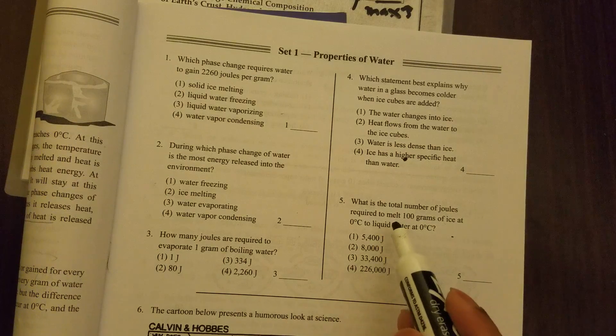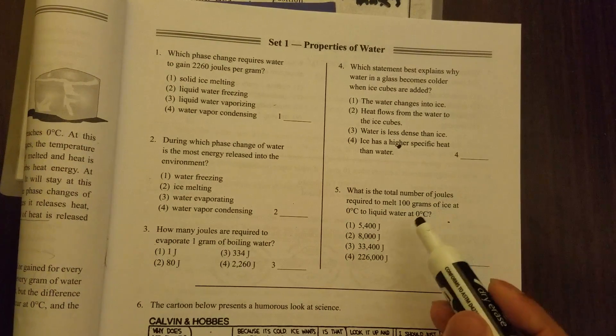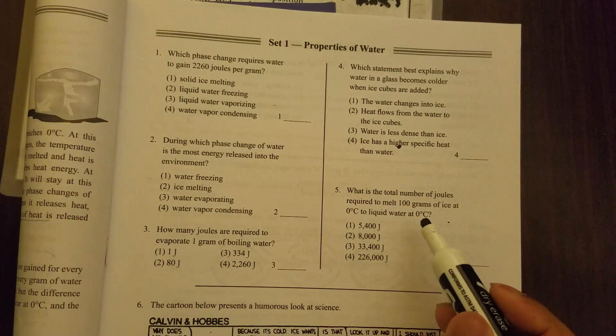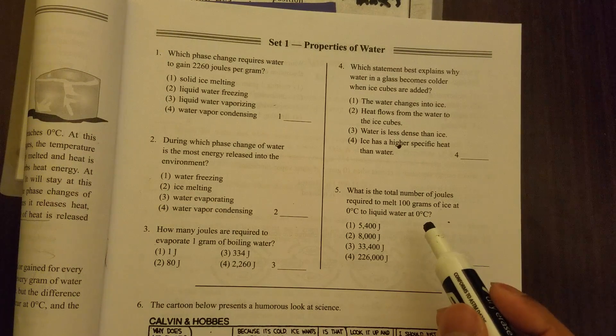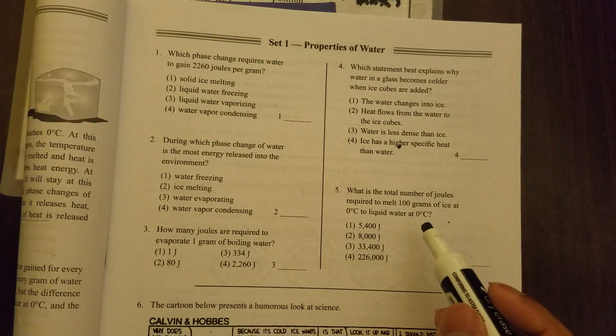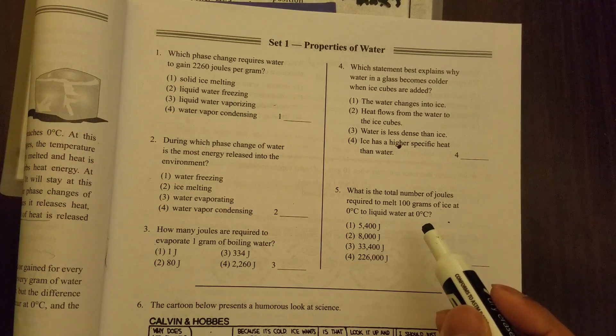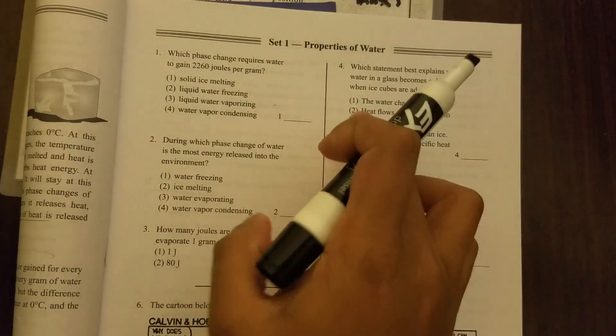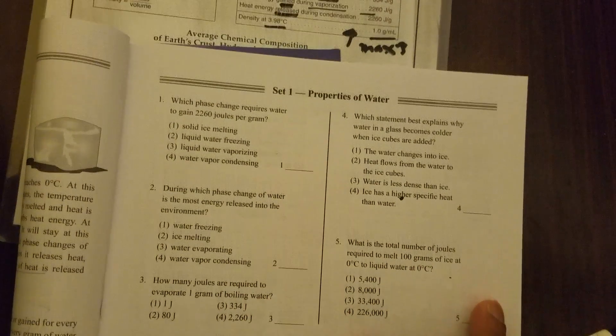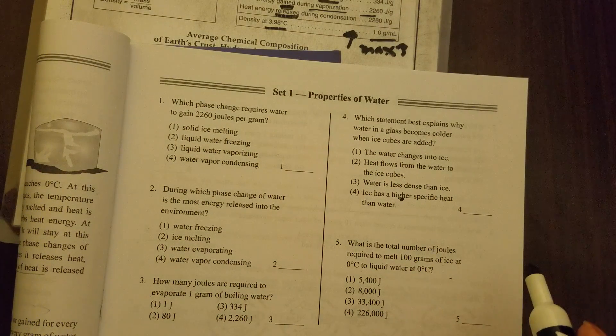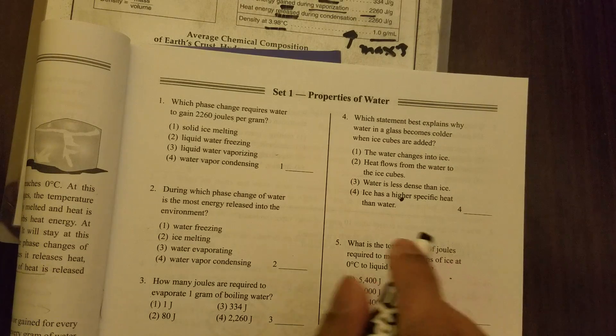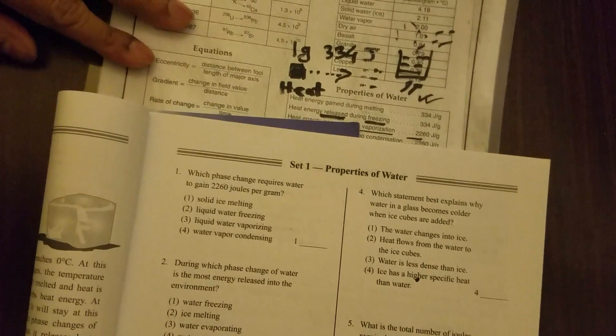Now let's look at question number five. What is the total number of joules required to melt 100 grams of ice at zero degrees Celsius to liquid water at zero degrees Celsius? I want you to try question number three and four. Question number five is a little tricky.